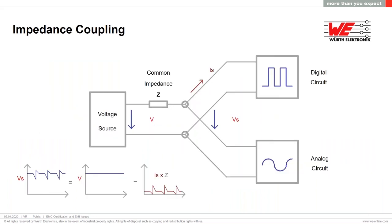Impedance coupling is another important issue. If you have a common voltage source with a common impedance and both a digital and analog circuit — if the digital circuit draws current impulses, it creates a voltage on the common impedance, and this voltage can reflect to the analog circuit. This can cause issues in the functioning of analog circuits. For example, if you have a sensor or need a really precise voltage level, any disturbance in that voltage can cause errors in your device.